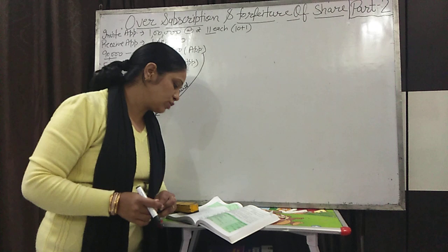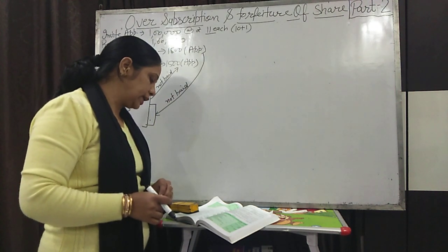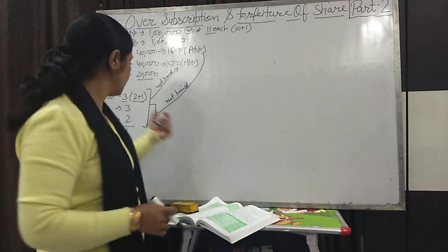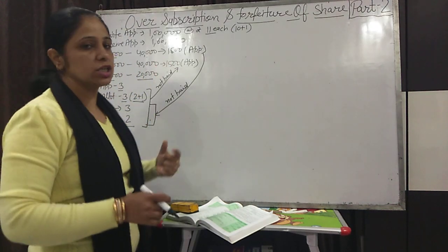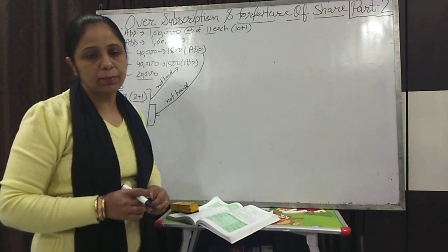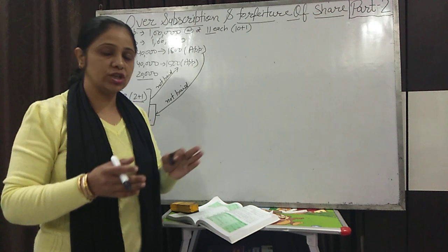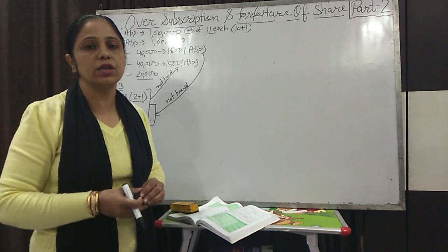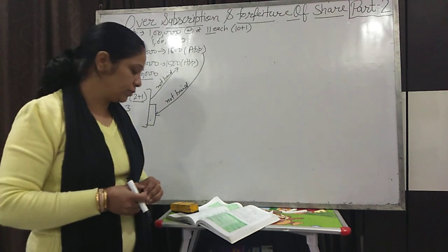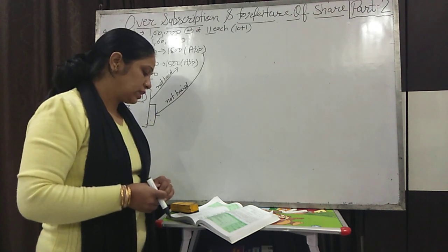All the shares of Risha and Sudha were forfeited and subsequently reissued at ₹7 per share fully paid up. Since shares are ₹10 each, the company reissued at ₹7 — that is a discount of ₹3 on reissue. We need to pass journal entries in the books of Well Limited.